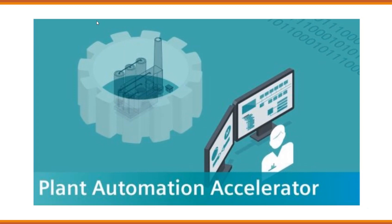And finally, Plant Automation Accelerator. The Plant Automation Accelerator is not directly a PCS7 component, but it is a concept or methodology aimed at accelerating the implementation and deployment of automation systems in industrial plants, facilitating faster and more efficient program execution. It is a separate software package offered by Siemens to perform bulk engineering in PCS7.